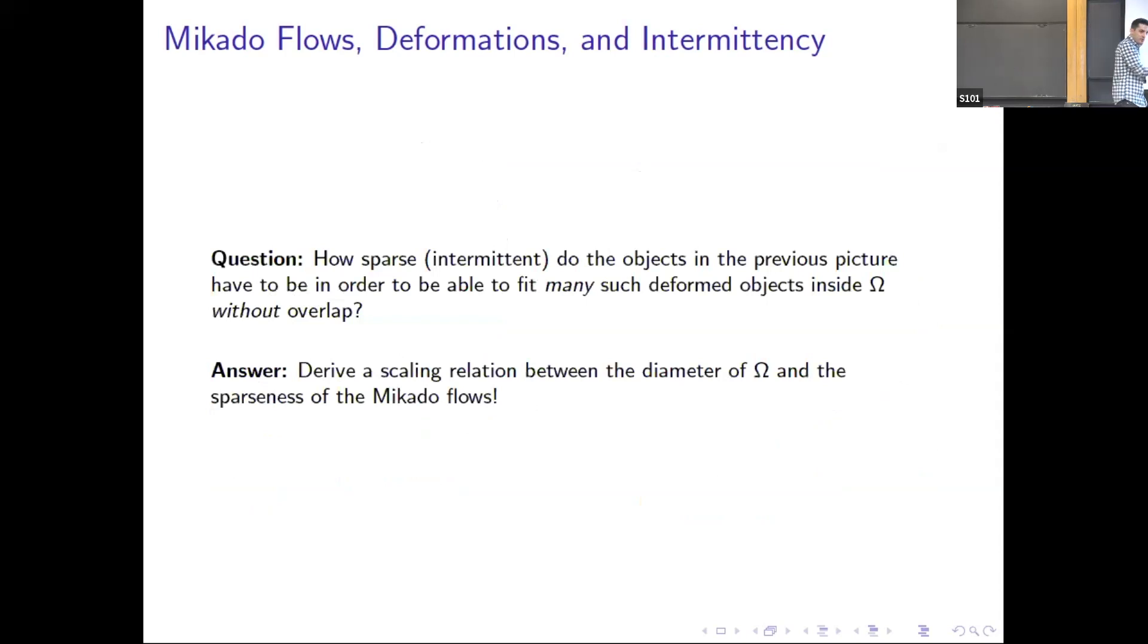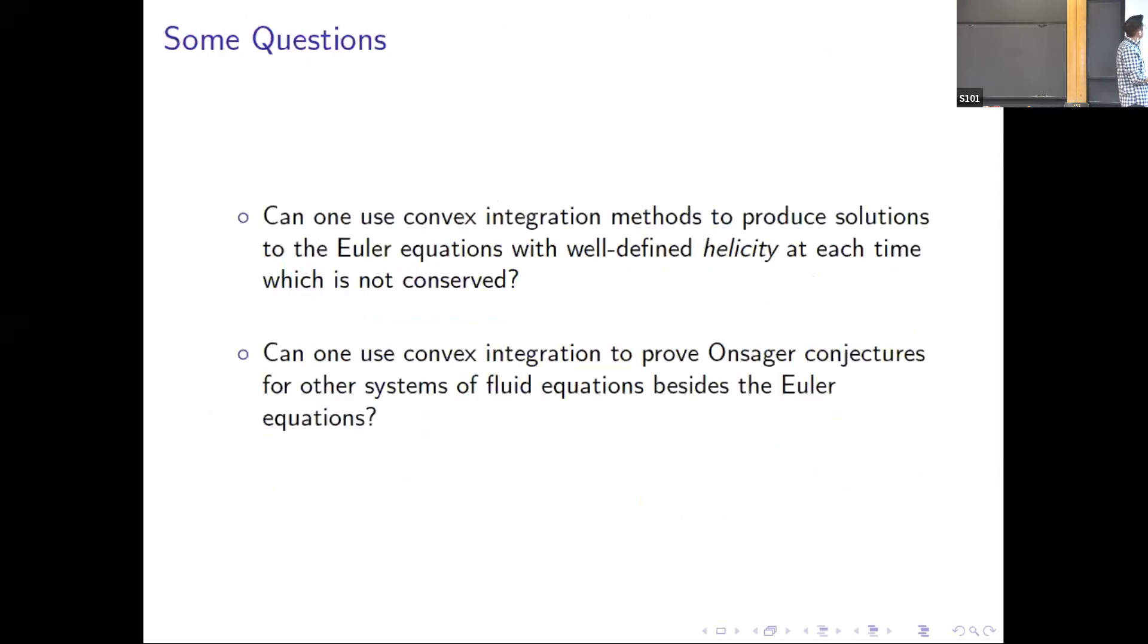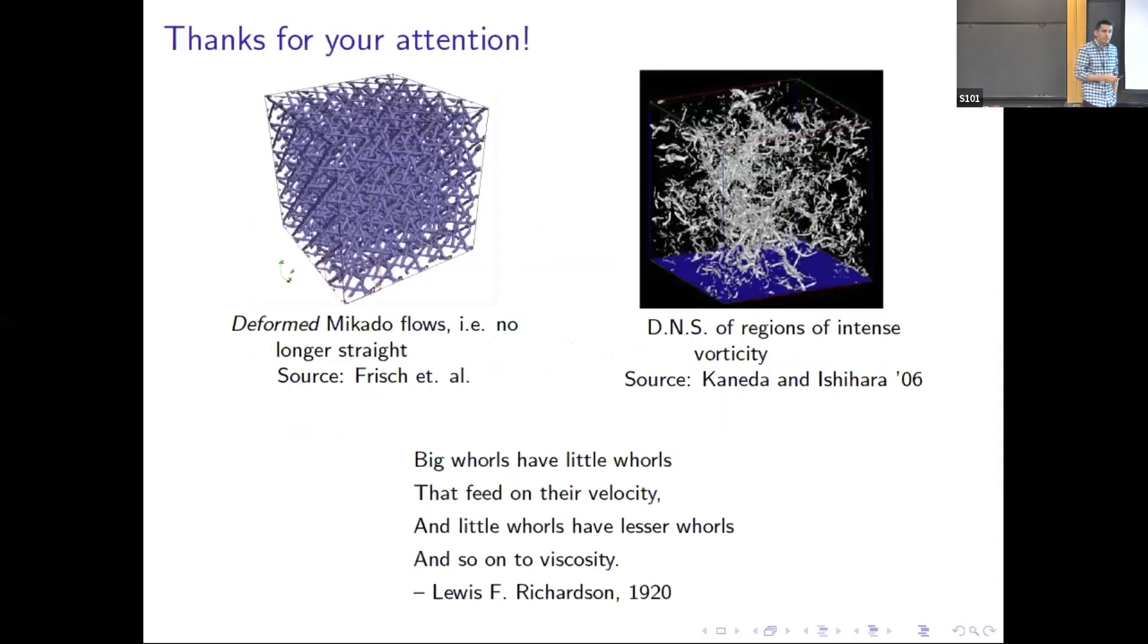One can quantify this a little bit more accurately, but that's part of the proof. In terms of things that I'd like to think about, I think one interesting question would be to take a different invariant of the Euler equations, namely the helicity, and construct a solution for which this object is well-defined at every time, and maybe not conserved. Similarly, as Xiao Yitao mentioned, one could try and use convex integration to demonstrate the sharpness of other thresholds, for example analogs of Onsager conjectures. And with that, I will thank you for your attention.